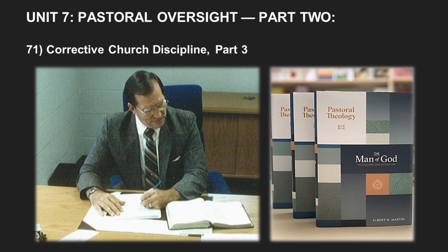So that is the first major form of corrective discipline. It takes the form of verbal efforts to bring the sinning brother or sister to see his sin, repent of it, make whatever restitution is necessary, and to reform his ways. But then there is the second category: the social.